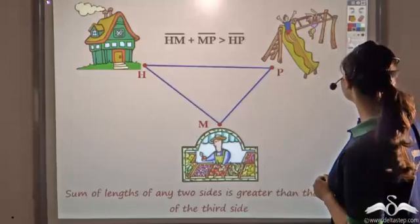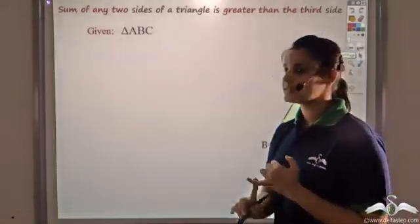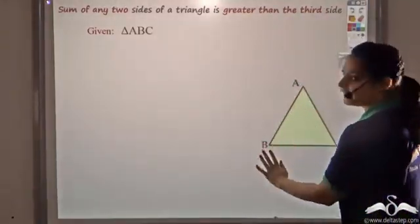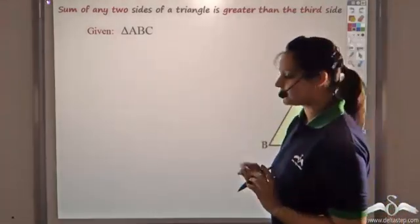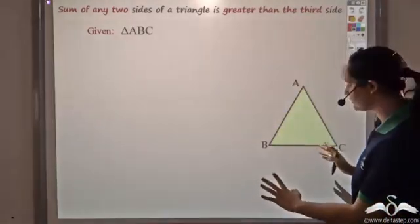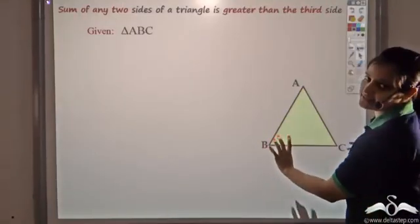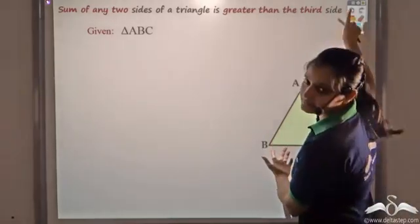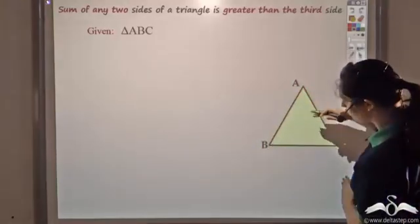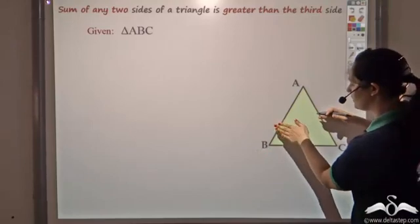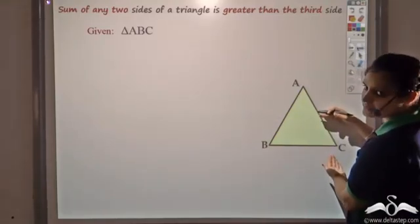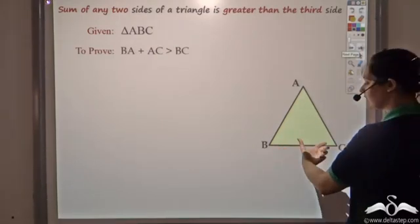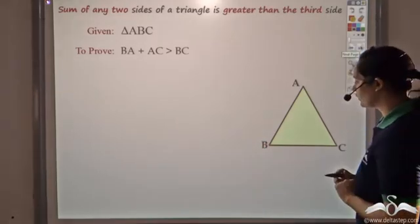Now let us try to prove this. We want to prove that the sum of two sides in a triangle is greater than the third side. We have triangle ABC. Let's take sides BA and AC — the sum of these two sides should be greater than the third side, which is BC. So what we want to prove is that BA plus AC is greater than BC.